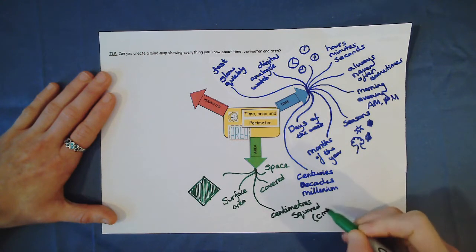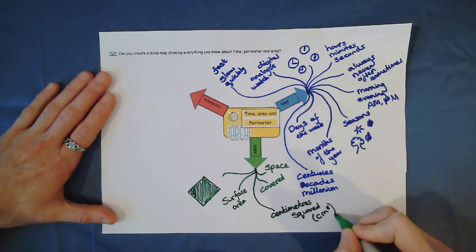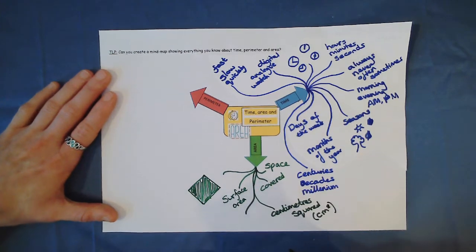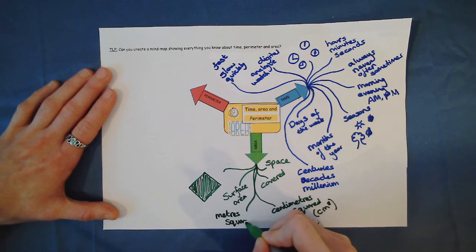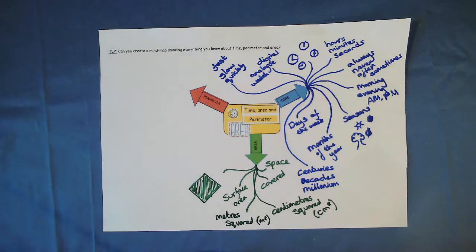CM like short for centimetres, with a little two for squared. Or, could be metres squared, couldn't it? If you've got anything else to add, add it yourself.